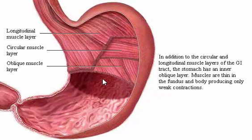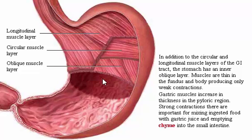In addition to the circular and longitudinal muscle layers of the GI tract, the stomach has an inner oblique layer. Muscles are thin in the fundus and body and produce only weak contractions. Gastric muscles increase in thickness in the pyloric region, where strong contractions are important for mixing ingested food with gastric juice and emptying chyme into the small intestine.